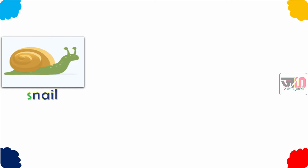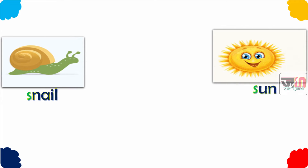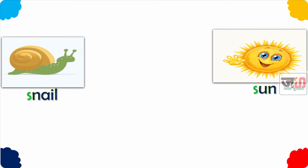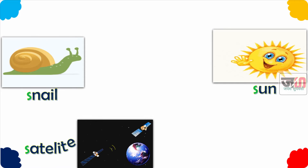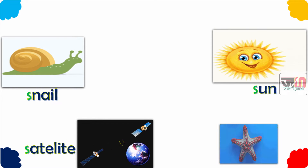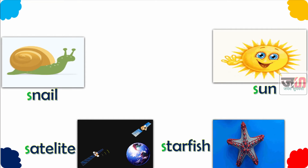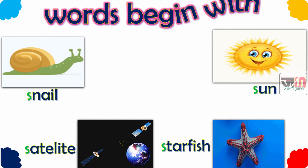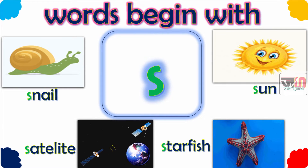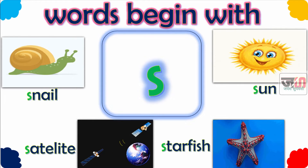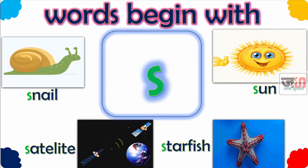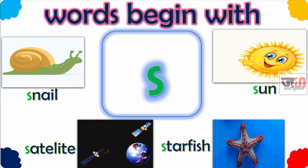Hello children, we see here some pictures and their names: Snail, Sun, Satellite and Starfish. All these words begin with letter S. Words begin with S. Today we learn the words that begin with S.